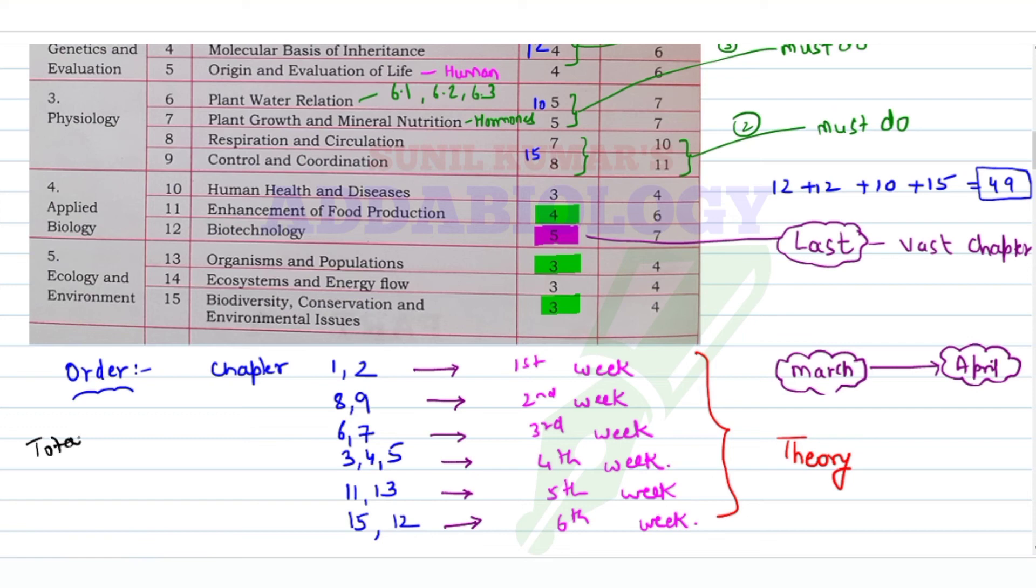When I total it up, the total marks you can score if you follow this strategy is somewhere around 90%. So 64 will be your theory if you follow these chapters in order, and 30 marks will be your practical, which totals to 94%. Is it not sufficient enough? Definitely yes. We're scoring more than 90% if you follow these chapters.